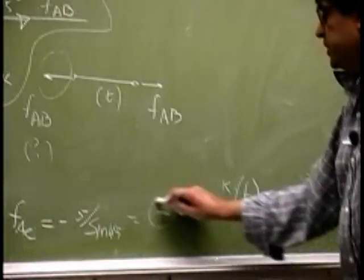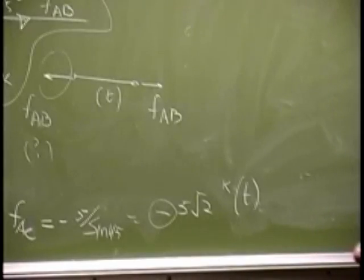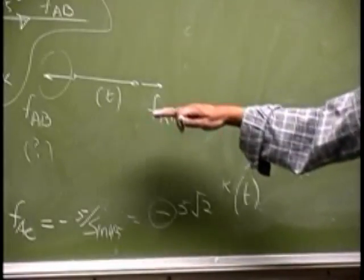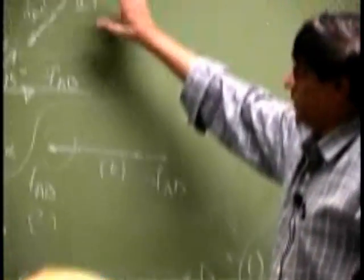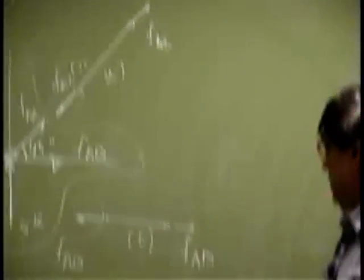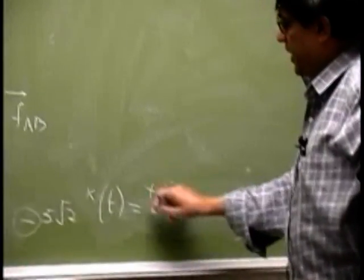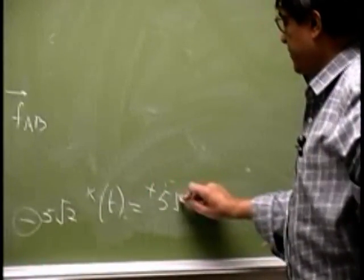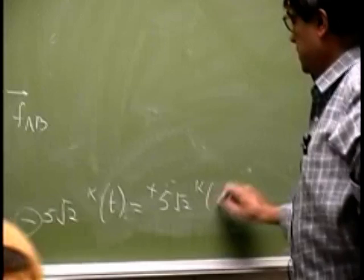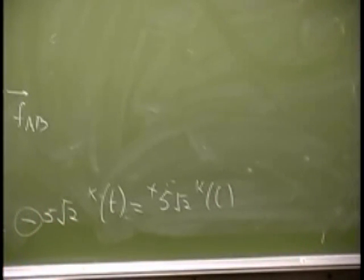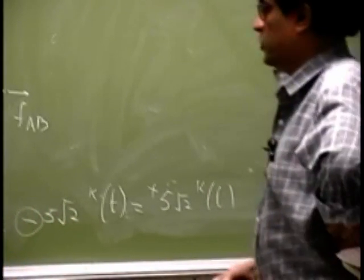But it came out with a negative sign. See, I made the choice here, this is going outward. But this came out negative, so I need to switch. I will make it positive, negative 5 is square root 2. So that is one force.